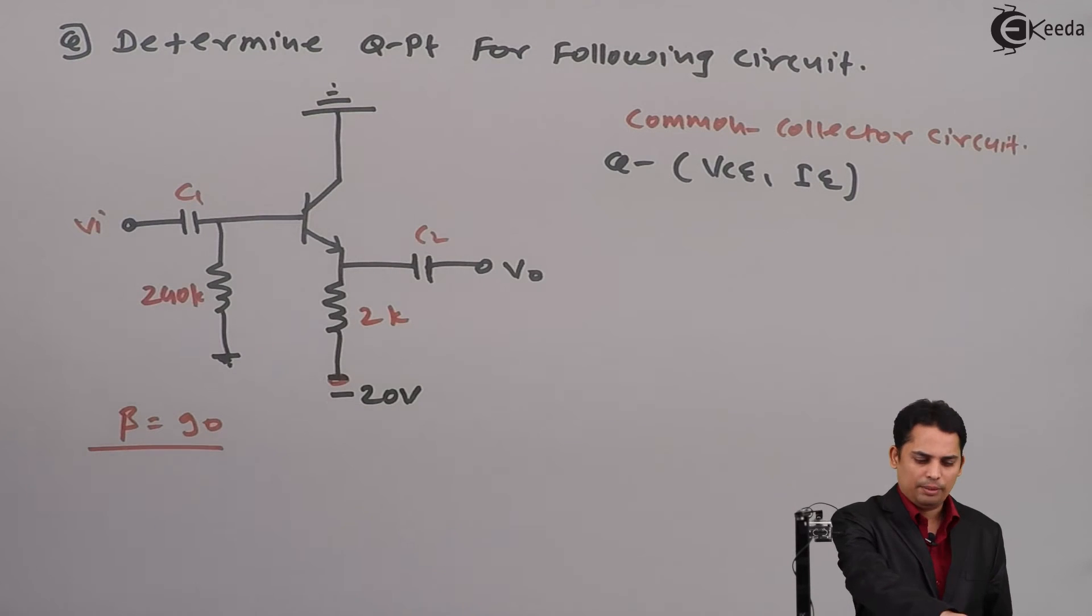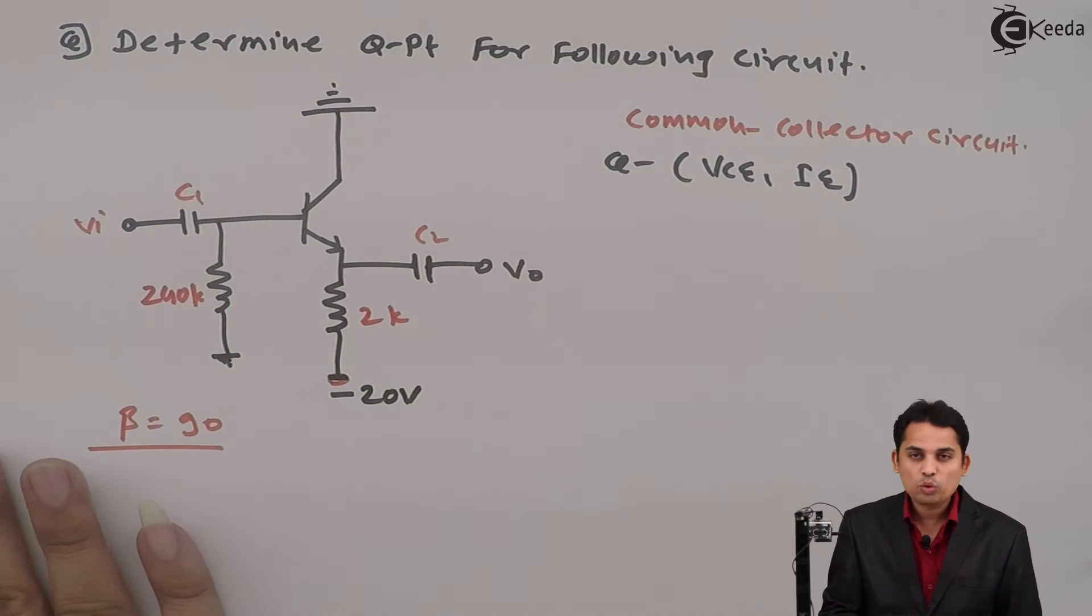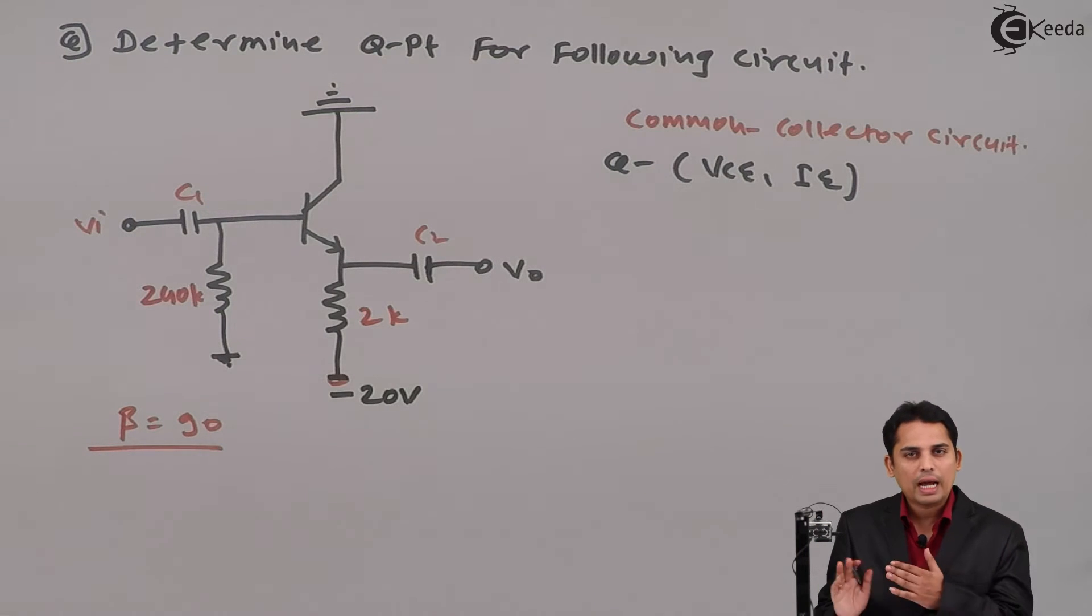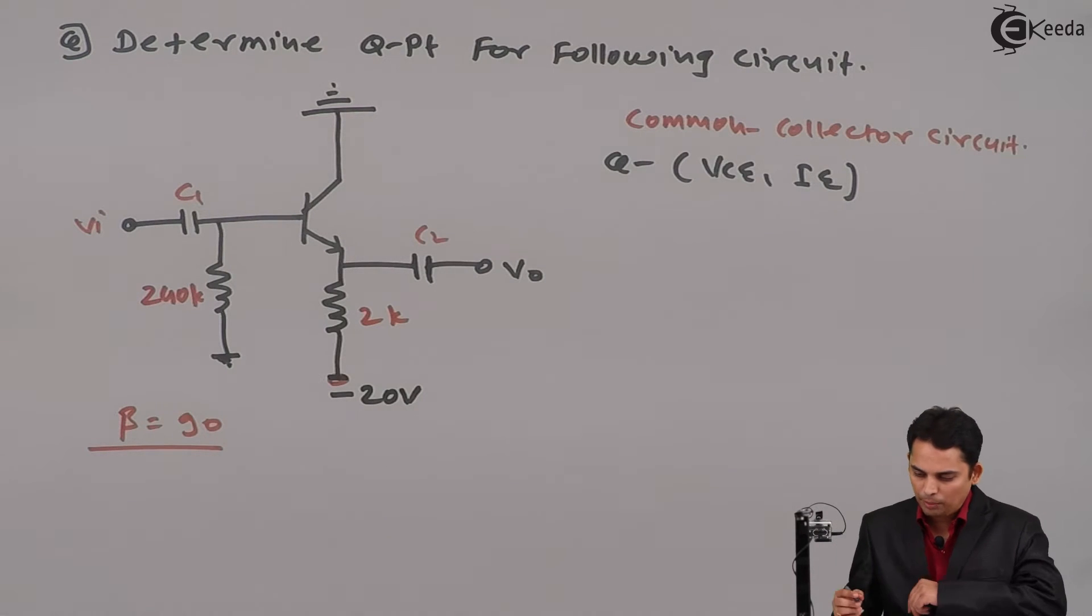So the rest steps will remain in same. Step 1 is to find out base current IB. From that base current find out IE and then finally find out collector to emitter voltage. So apply step 1.